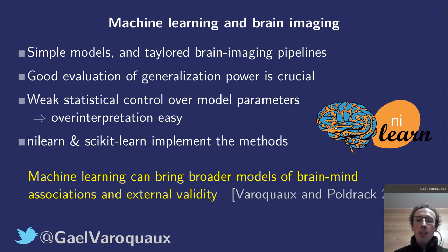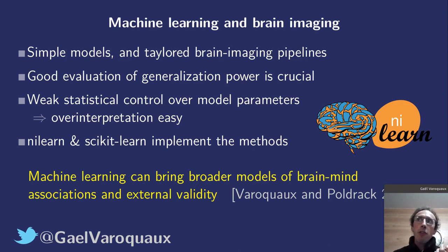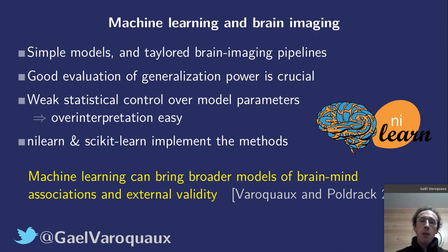Behind the success of machine learning on brain imaging, I believe something fairly fundamental is happening in the way we do science: these models establish their validity via generalization, and so they can bring broader models of brain and mind association than simple statistical testing. Thank you very much.